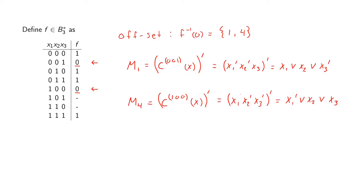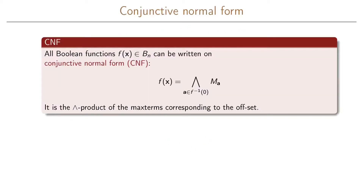So we have two max terms: M4 and M1. Similar to the min terms, they consist of all the variables — either xi or xi prime — but for max terms the variables are separated by OR. This leads us to another normal form called the conjunctive normal form, abbreviated CNF. All boolean functions can be written in CNF, and the CNF is given by the AND product of all our max terms that correspond to the offset of the function, where the offset is the set of inputs with output 0.